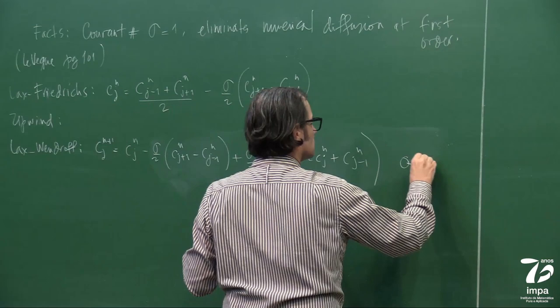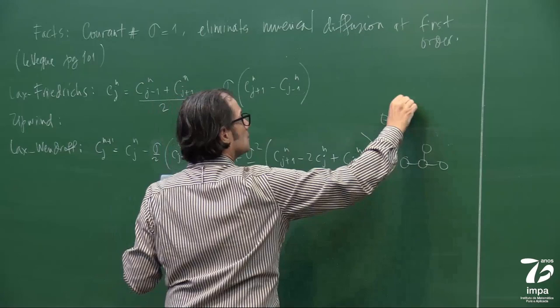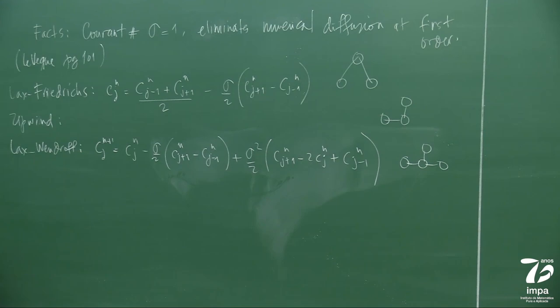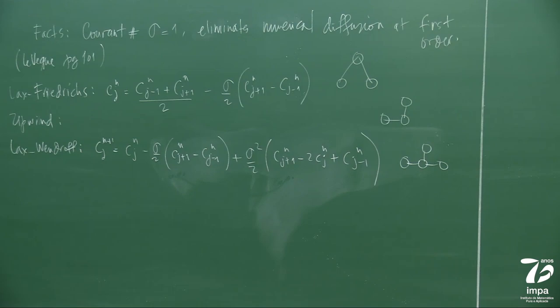The molecule of Lax-Wendroff is like this — upwind we know the molecule. This one is more like a centered scheme, or sometimes called leapfrog. I'm not going to deduce the methods. Lax is a very famous mathematician — he had these two methods, Lax-Friedrichs and Lax-Wendroff. Both methods are explicit; they're constructed using tricks with the PDE in a more sophisticated way to get higher-order terms. The Courant number appears in both. They were deduced for conservation laws.